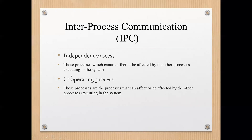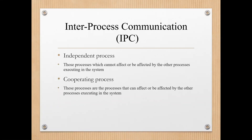In an operating system, two or more processes are executing concurrently — meaning at the same time. When two or more processes are executing simultaneously, they may either be independent or cooperating processes. Independent processes are those which cannot affect or be affected by other processes executing in the system — they don't care what other processes are doing, which memory locations or devices they are using.